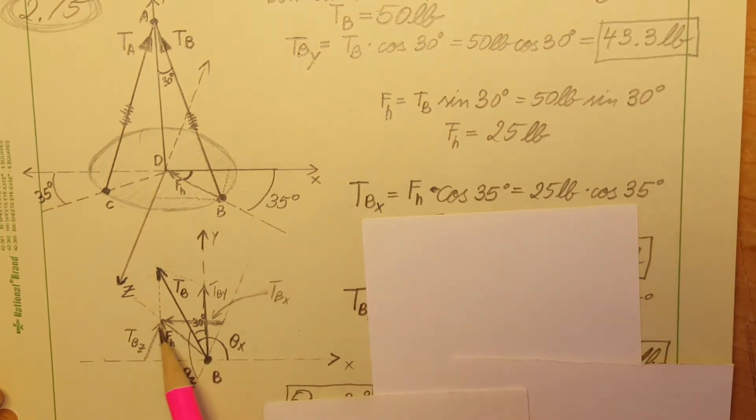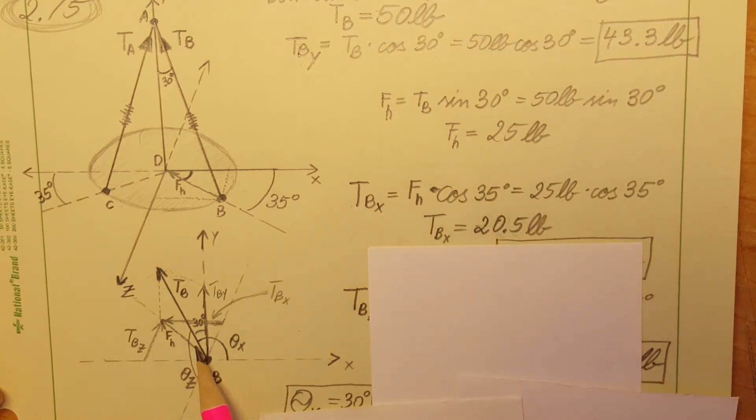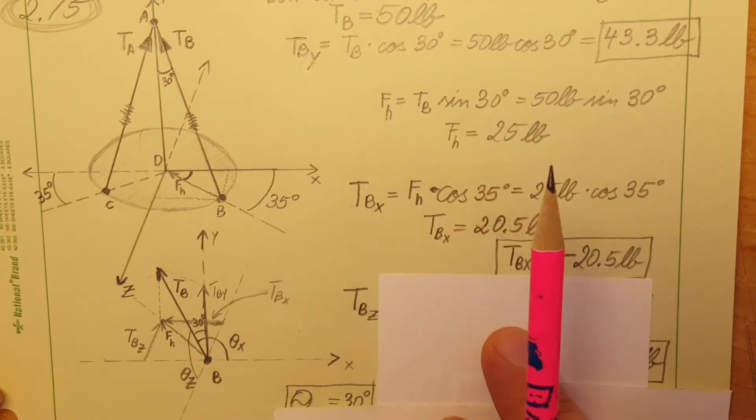The next one, let's calculate TB_x. We're given the angle 35, so let's use that. We can break up the FH and then plug in, and we're going to have a value of 20.5 pounds. But when we redraw this we can see that the x component is going in the negative x direction, so our x component is negative 20.5 pounds.